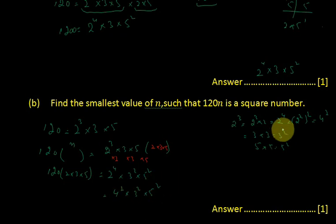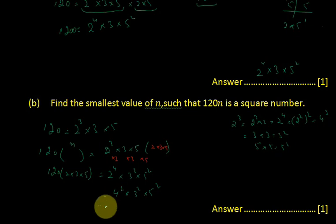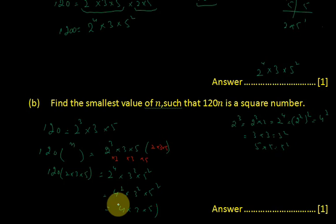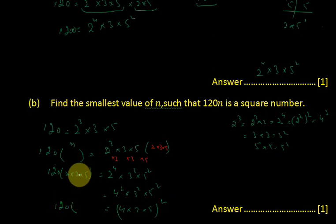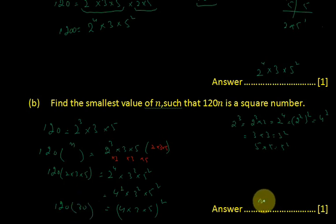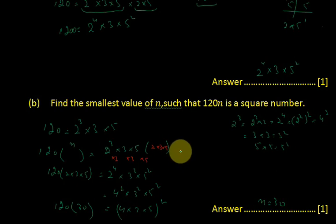For making it a perfect square we write 4 squared multiplied by 3 squared multiplied by 5 squared. 2 to the power 4 can be expressed as 4 squared. It equals 4 multiplied by 3 multiplied by 5, which is 120 multiplied by 30, giving 3600. So n is equal to 30.